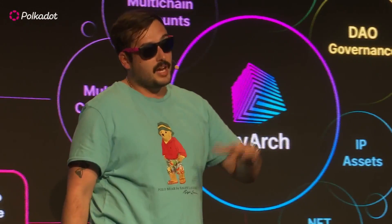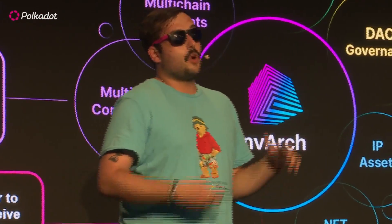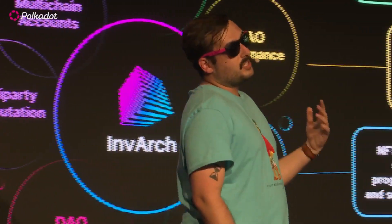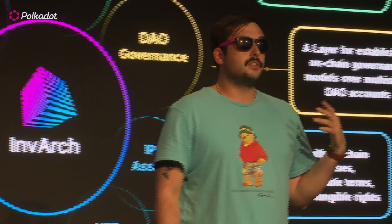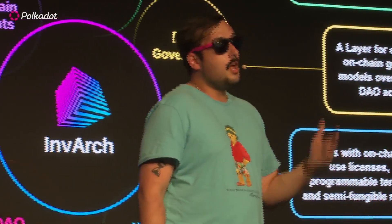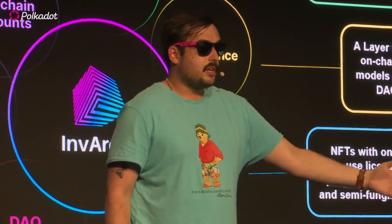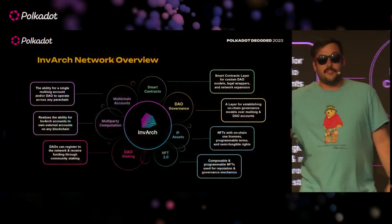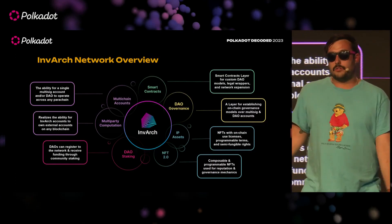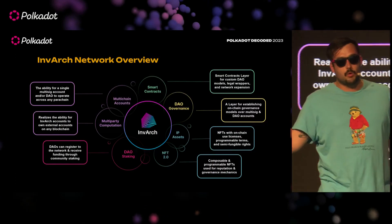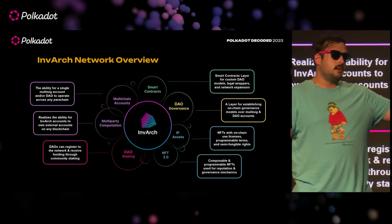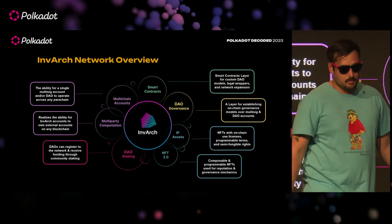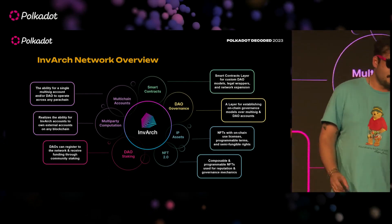Then we have off-chain signing. With off-chain signing, you can have a multi-sig or a DAO deployed on the Invarch network, secured by Polkadot, which is able to generate and fully control a native account on Bitcoin, Ethereum, Doge, Solana, or some chain someone just made five minutes ago — it doesn't matter.